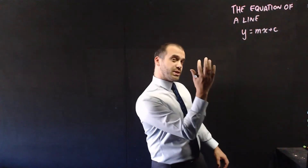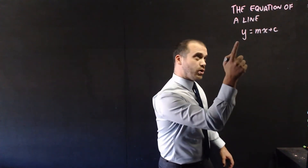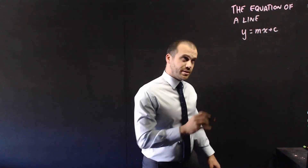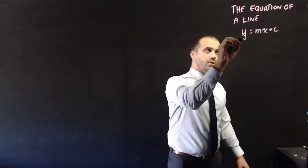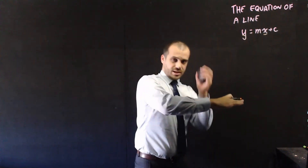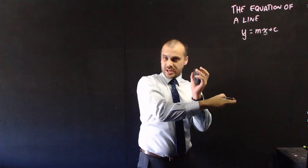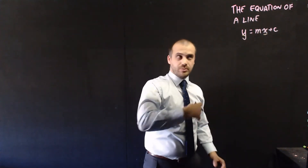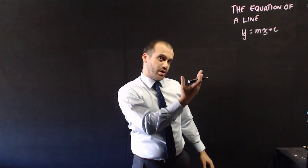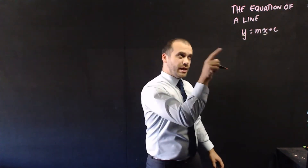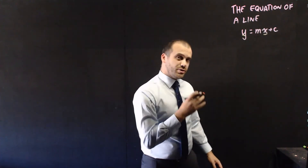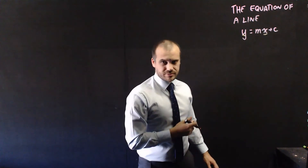The equation of a line can be expressed as y equals mx plus c. Now y and x are your x and y axes, where you can put in an x value and it'll spit out a y value. But m and c are numbers, and those numbers have significance.